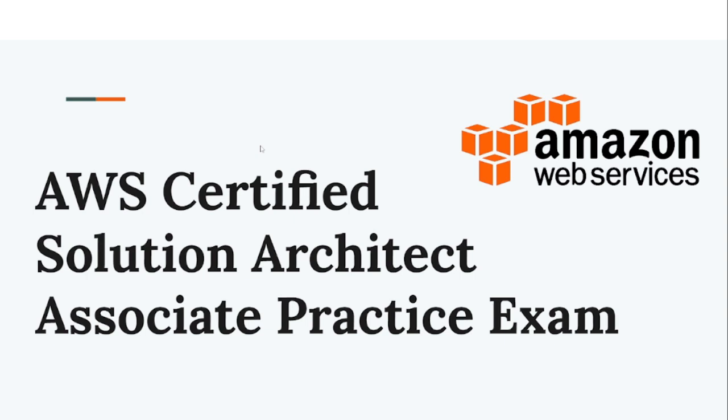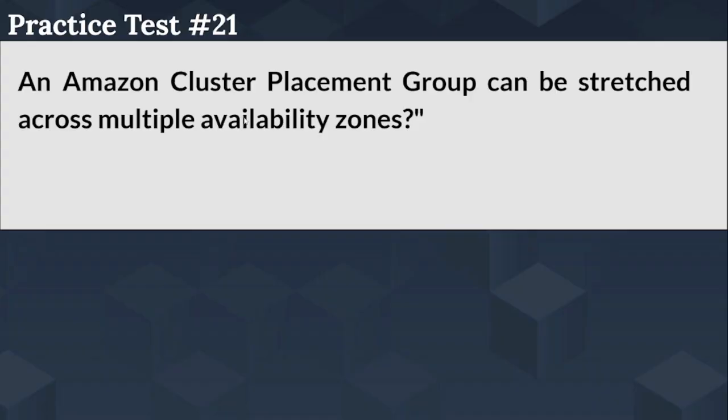The question is: An Amazon Cluster Placement Group can be stretched across multiple availability zones. The options are: Option A, true; Option B, false.